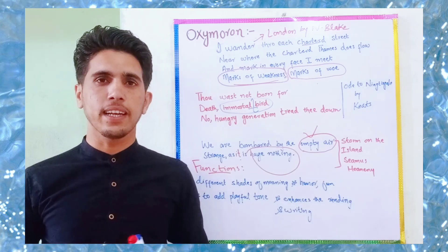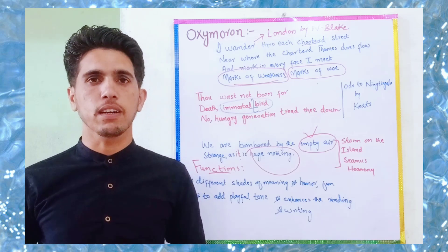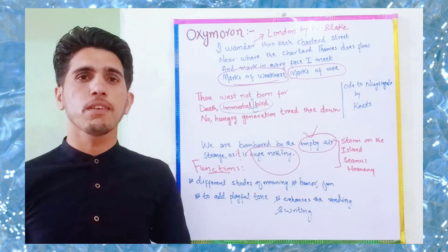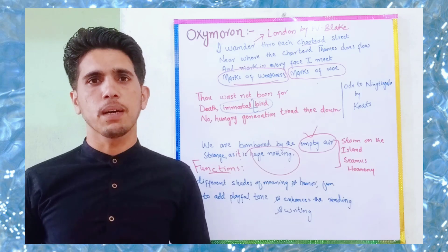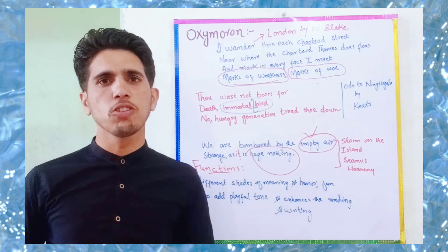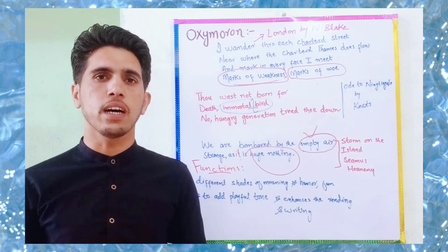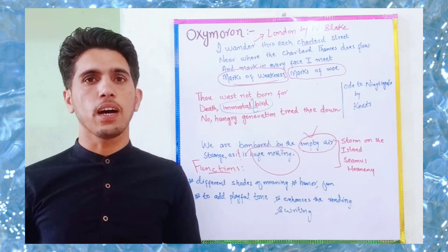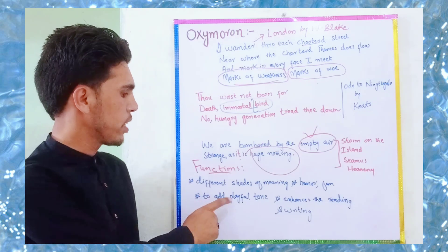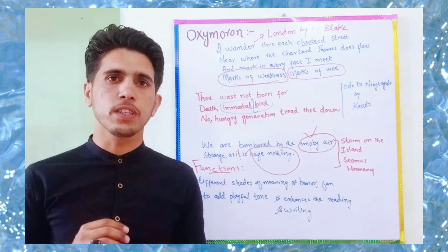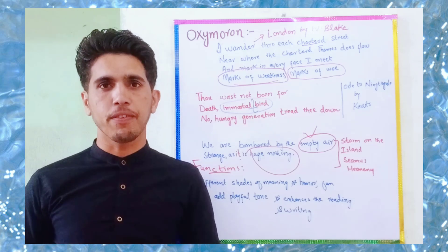Now in the last section of the video, we look at the functions of oxymoron in literary works. Oxymoron gives different shades of meaning — multiple layers of meaning — to literary works. It creates humor, pokes fun, and creates a dramatic effect in literary works, as we have seen in the Shakespearean examples. It adds a playful tune to the works, and it enhances reading and writing by creating a special effect.